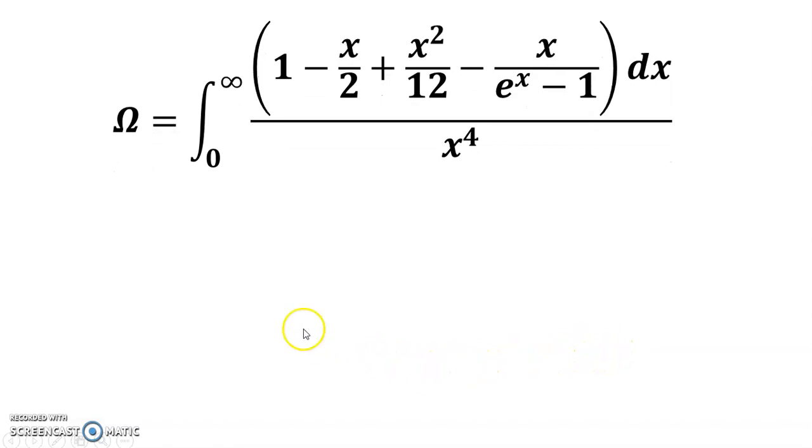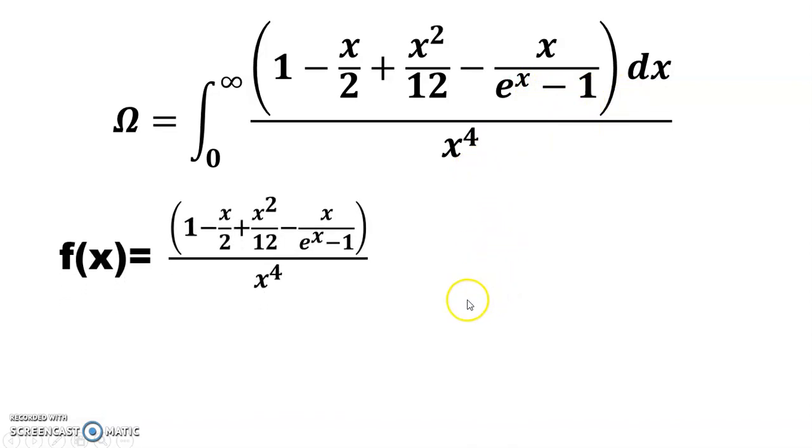Now, for example, omega equals integral from 0 to infinity of (1 - x/2 + x²/12 - x)/(e^x - 1) divided by x^4 dx. So f(x) equals (1 - x/2 + x²/12 - x)/(e^x - 1) times 1/x^4.